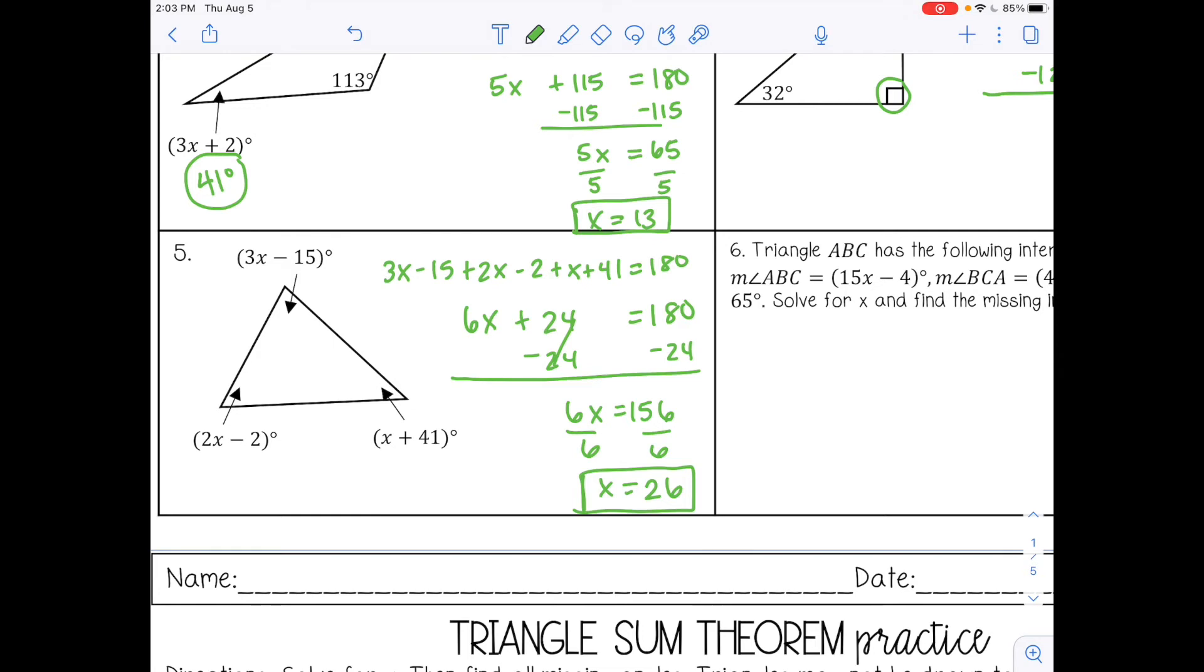Then substitute 26 back in to all three of those expressions to get your actual degree measures. So this would be 3 times 26 minus 15, that's 63 degrees. 2 times 26 minus 2, that would be 50 degrees. And 26 plus 41, that would be 67 degrees.